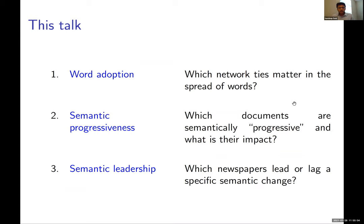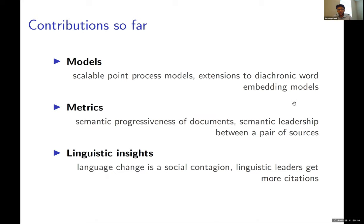To wrap up and summarize contributions across all three studies: point process models that can scale to millions of users; how to extend diachronic word embedding models so we can go beyond finding just what has changed; measures for progressiveness of documents and leadership between pairs of newspapers; and linguistic insights such as that language change in a social network takes the form of contagion, and that linguistic innovativeness or leadership does correlate with getting more citations.